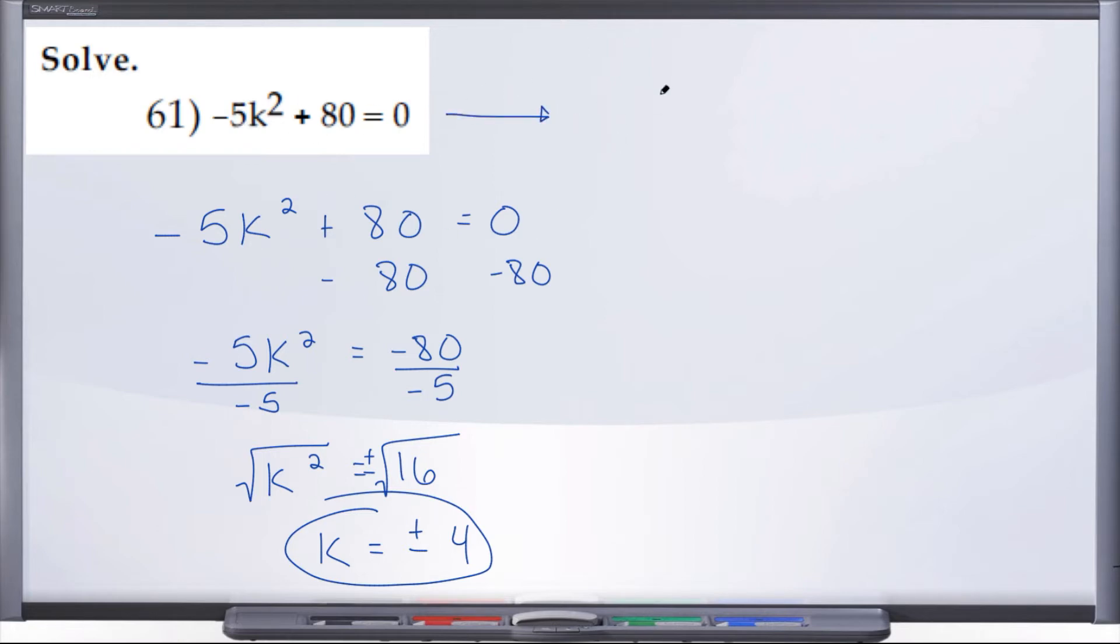First thing we could have done is factored out a negative 5, which would have left us with k squared minus 16 equals 0. You might recognize that k squared minus 16 is the difference of perfect squares.